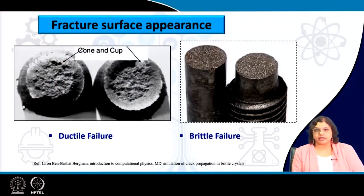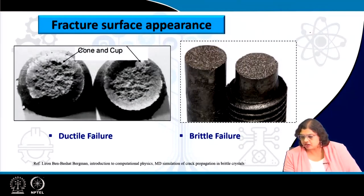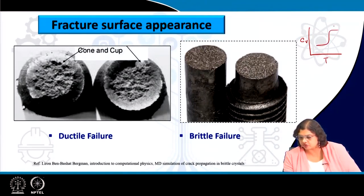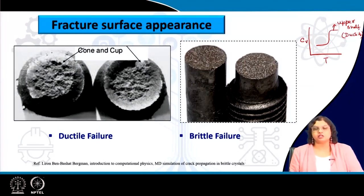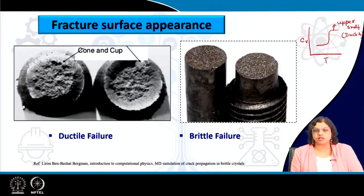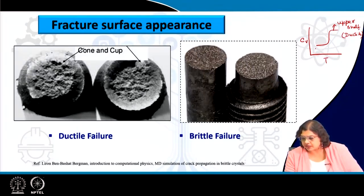When looking at the energy versus temperature diagram, we see it leads to two completely different failure modes. This S-shaped curve is very typical. The upper shelf shows ductile behavior, which is why it absorbs more energy — any ductile deformation leads to absorption of energy, increasing toughness. At lower temperature the same material behaves completely differently, and this is known as the lower shelf, where brittle failure occurs.